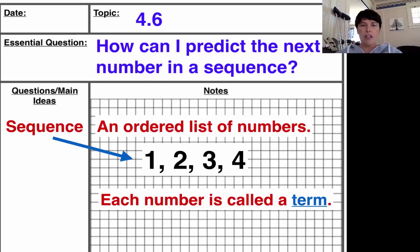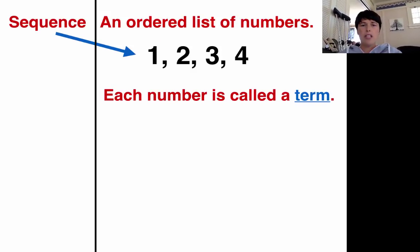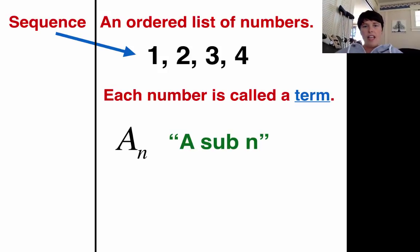And I'm going to be using that word a little bit, so I want to make sure you feel comfortable with it. Another thing I'm going to be using is a notation called a sub n. It looks like this. It's A with a little n down low. A sub n is just like a notation that we use for sequences.